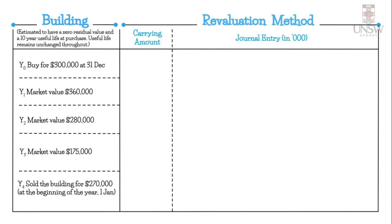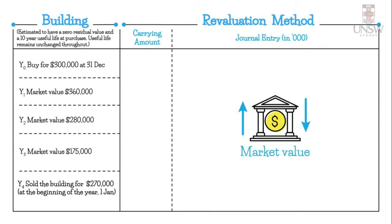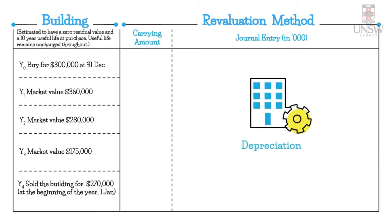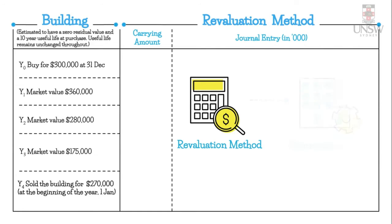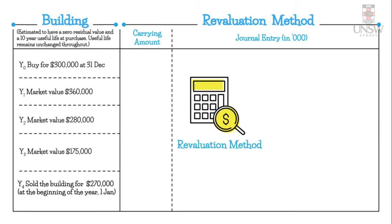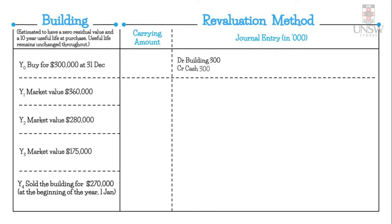We now compare this with the revaluation method. The revaluation method allows us to recognize both increases and decreases in the market value of the building. We will continue to depreciate the building — there is a common misconception that revaluation means no depreciation, but accounting standards require us to continue depreciating even when revaluing. In year zero, we record the purchase of the building for $300,000: debit building $300,000, credit cash $300,000, giving an initial carrying amount of $300,000.